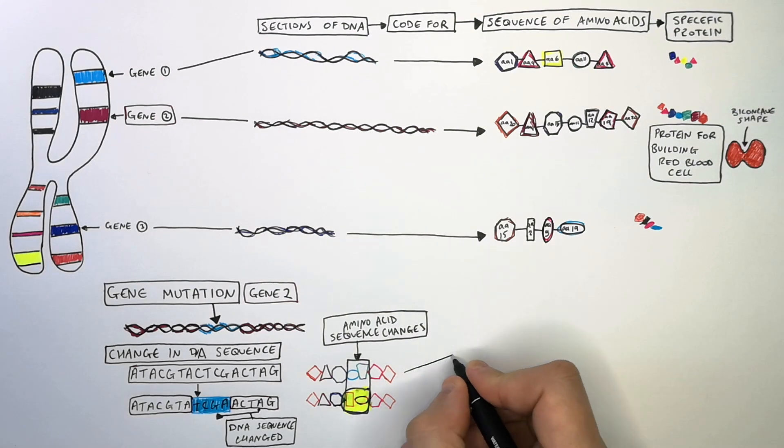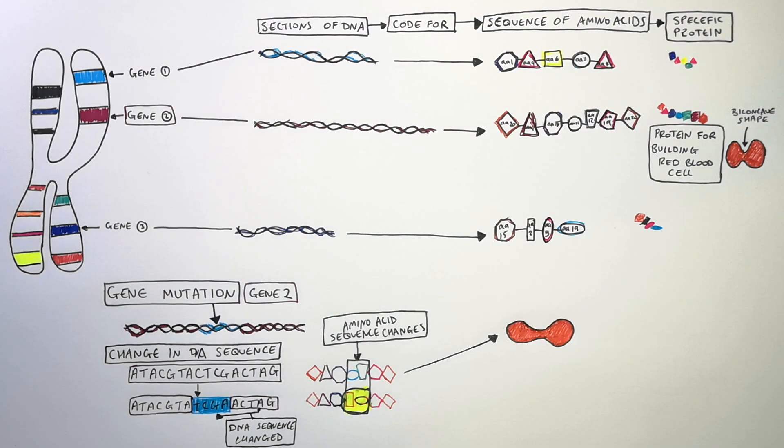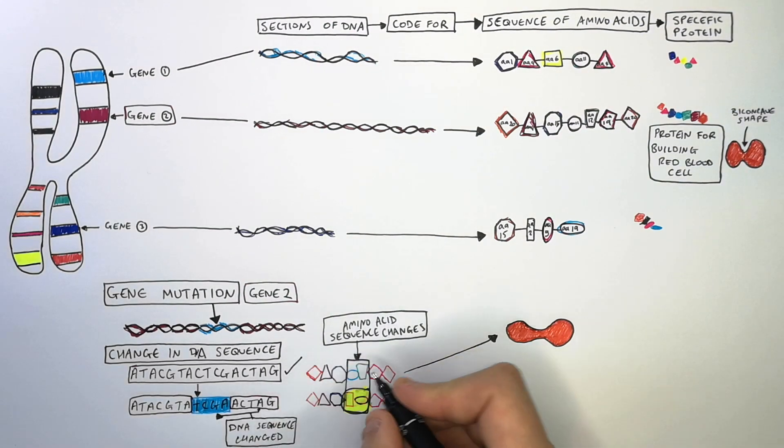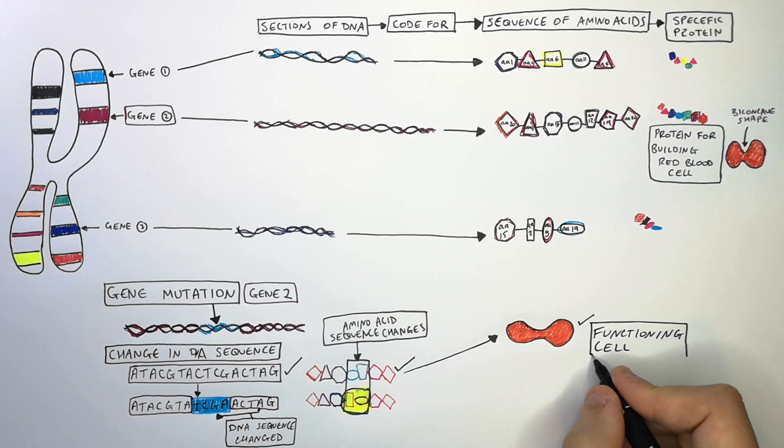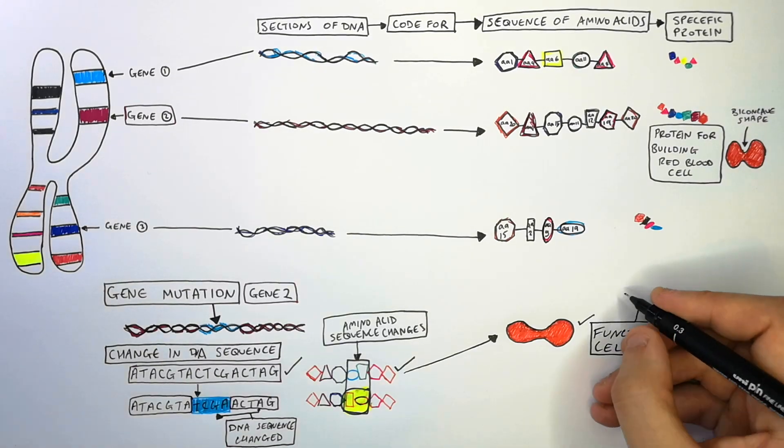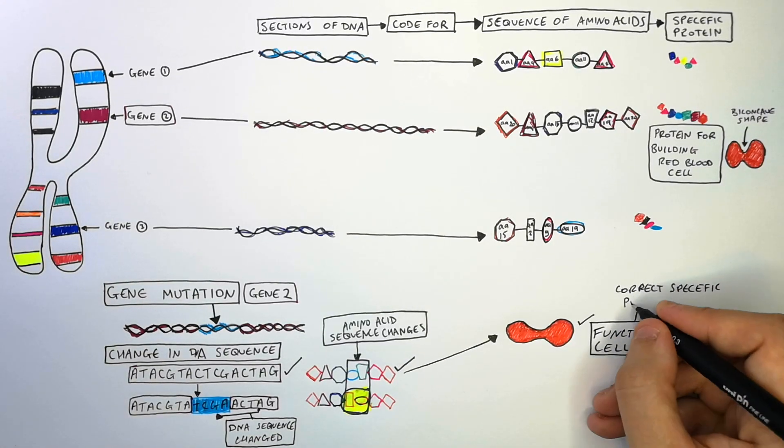So the non-mutated DNA in the example above is not mutated, which leads to an unmutated amino acid sequence, which leads to a functional protein. So that means that red blood cells can be made with the correct specific protein.